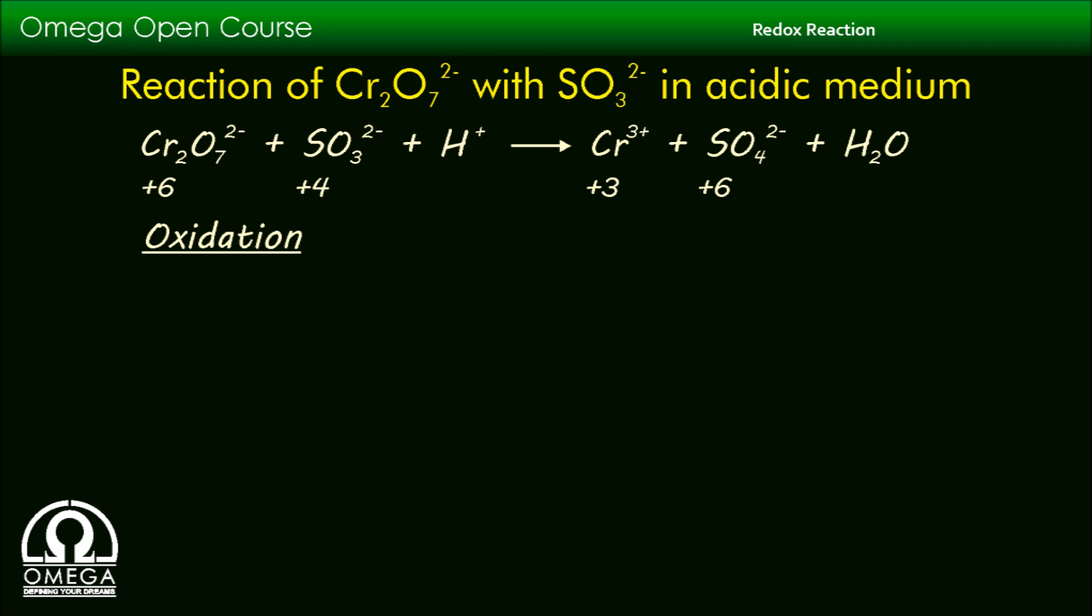Now let's consider the oxidation half. In the reactant part, the sulfur atom of SO3^2- ion has an oxidation number of +4. When it is converted to SO4^2-, the oxidation number of S increases to +6 and two electrons are released in this process.